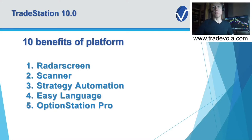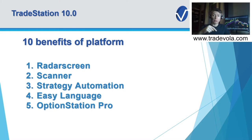We want to start with the five main features: RadarScreen, Scanner, Strategy Automation, Easy Language, and OptionStation Pro. I'll present these within TradeStation itself so we can go a little deeper into the details. If you want more information about any of these tools, feel free to leave a comment — we're happy to provide more details.